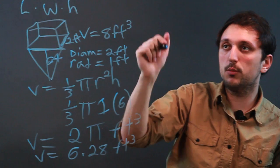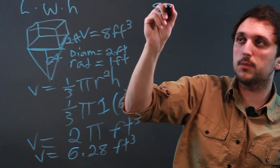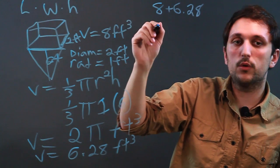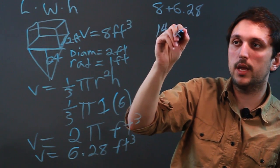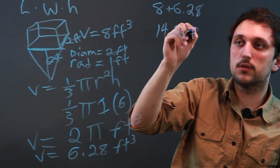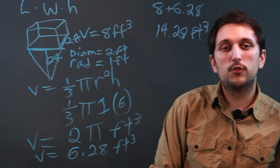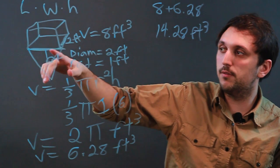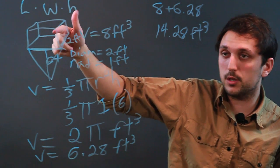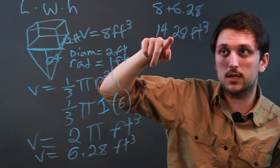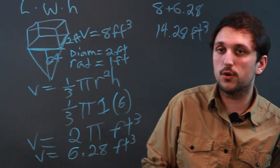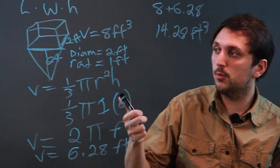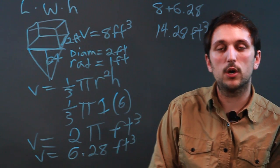So when we add it to 8 feet cubed, we're saying 8 plus 6.28 equals 14.28 feet cubed. So when you add the volume of a cube and a cone, you have to calculate the volumes separately and then combine them. And you've just learned how to put together the volume of a cube and the volume of a cone.